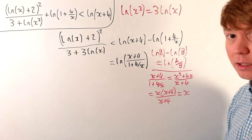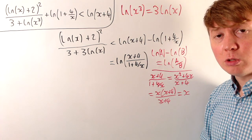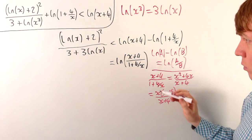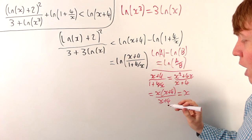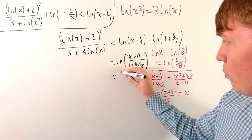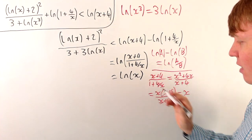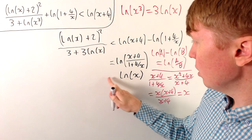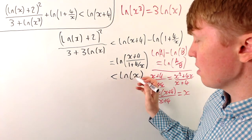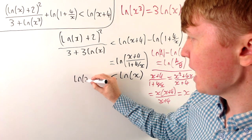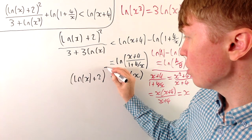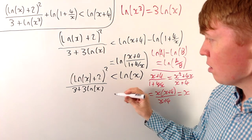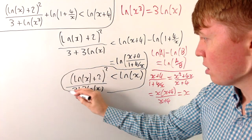This is all just equivalent to x, valid so long as x isn't equal to negative 4. We'll deal with which values of x the inequality is valid for in a moment. For now we've shown that (x+4) over (1 + 4/x) equals x, so the right-hand side is just ln x. Our inequality is now ln(x+2) all squared divided by (3 + 3 ln x) is less than ln x.